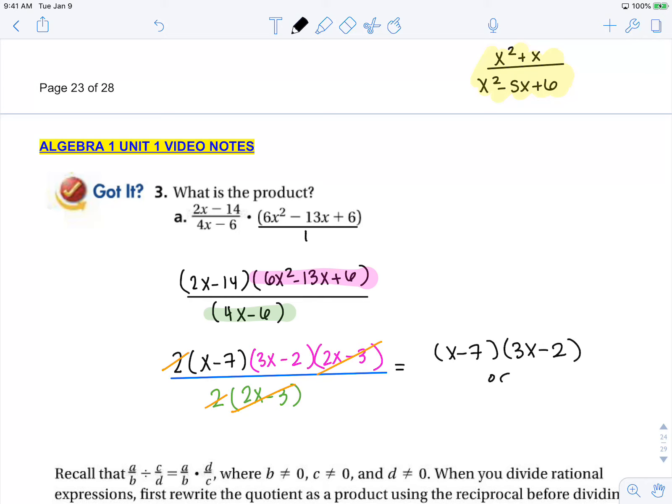that would be 3x squared minus 2x minus 21x, which is minus 23x plus 14.